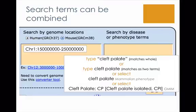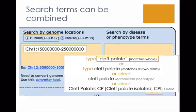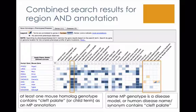Search terms can also be combined in the HMDC, for example using a human genomic position alongside a disease term. Typing a disease term in quotes matches the whole term, or you can enter multiple disease terms — so 'cleft palate' will match as two terms. A drop-down menu allows you to select cleft palate as a specific mammalian phenotype in structured vocabulary, or as a specific OMIM disease. Using 'cleft palate' in quotes, the combined search returns every gene within the genome region that contains at least one mouse homolog genotype with cleft palate, or a child term of cleft palate as an MP annotation.